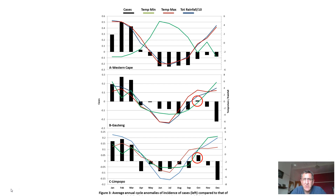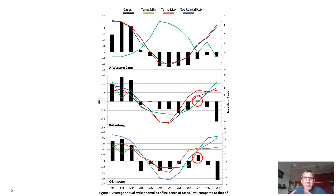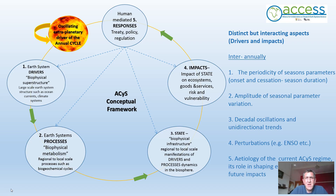This graph looks at the annual cycle of diarrhea — work that I do. You can compare the Western Cape, Gauteng, and Limpopo, and it shows which months of the year typically see high incidence of diarrhea and which see low incidence. It's interesting to compare these different climate zones. Even though we have different rainfall patterns, temperature is really impacting incidence. We can compare between years to understand what drives the differences and what that means for future climate impacts.